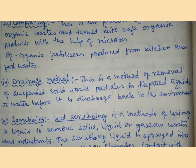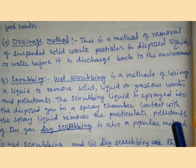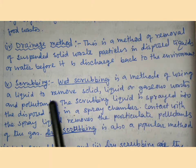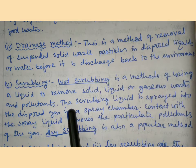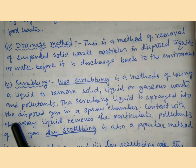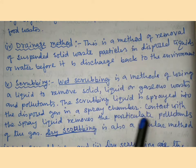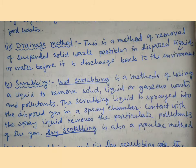Scrubbing: there are two types — wet scrubbing and dry scrubbing. Wet scrubbing uses a liquid (water) to remove liquid or gaseous waste pollutants. The scrubbing liquid is sprayed into the disposed gas in a spray chamber; contact with the spray liquid removes the particular pollutants from the gas. Dry scrubbing is also a popular method.